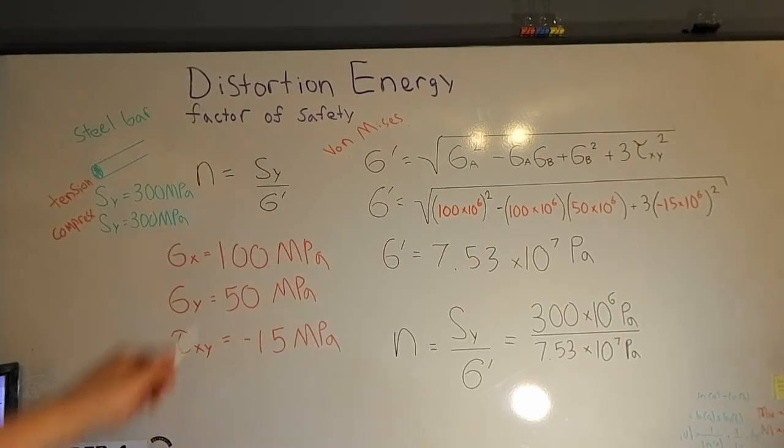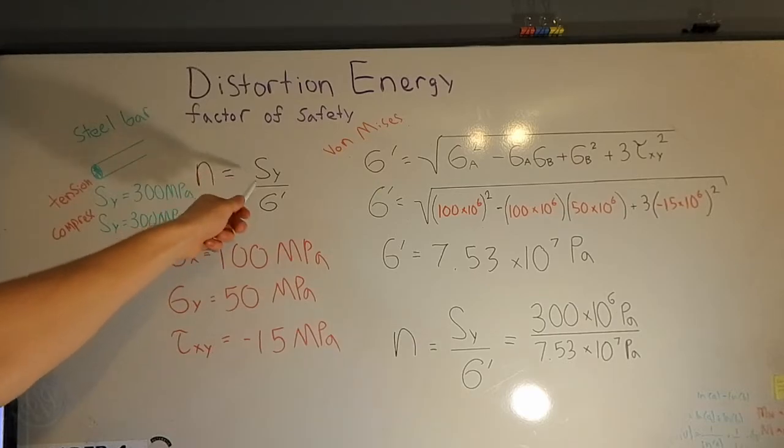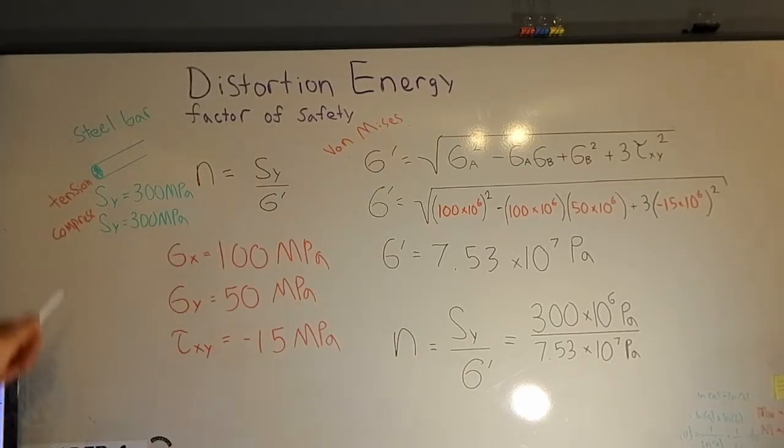Moving on to our final equation, factor of safety equals the minimum yield strength over the von Mises stress. And note that the minimum yield strength is the same for both tension and compression. So in this case, we're gonna have the same factor of safety.